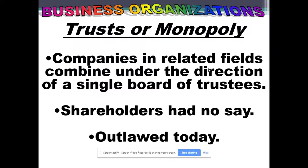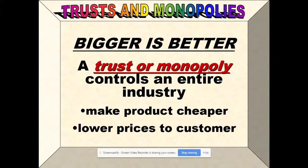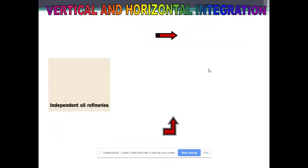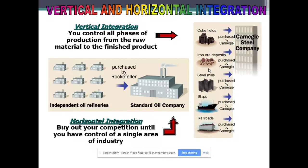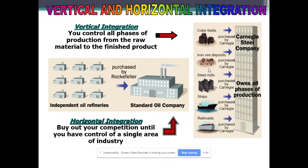Trusts and monopolies are outlawed today under the Sherman Antitrust Act. Some argued trusts aren't bad — they can make goods cheaper and lower prices for consumers. Teddy Roosevelt didn't have a problem with trusts so long as they offered fair prices and treated workers well. What he didn't like was exploiting the consumer or worker — those he called corrupt monopolies. Vertical integration means controlling every facet of production; horizontal integration means buying out your competitors through holding companies or trust arrangements.